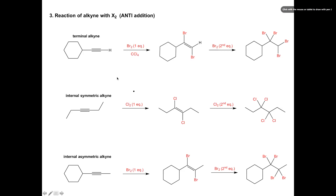Now we're going to be reacting an alkyne with X2. This is a reaction we've seen with alkenes, and we remember from our mechanism that we get an anti-addition of our halogens. There are three types of alkynes that we can see. We can have a terminal alkyne where one side is an R group and the other side is an H.